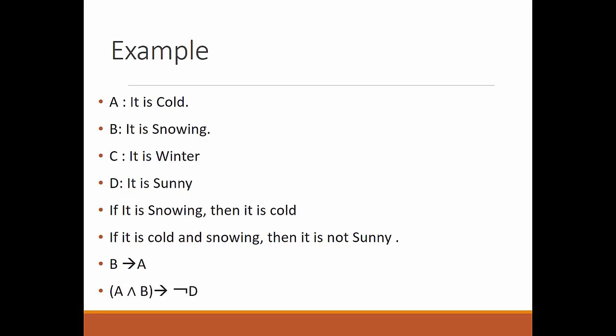In propositional logic, 'it is cold' is represented with a single literal A, 'it's snowing' is represented with B, and 'it's winter' is represented with C. Each sentence, even if it has both a subject and predicate, is represented with a single literal. For example, 'if it's snowing then it's cold' — snowing is B, cold is A — so this is represented as B implies A.